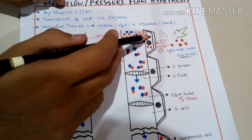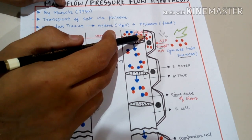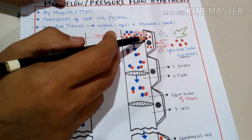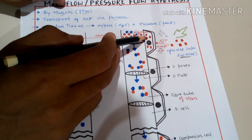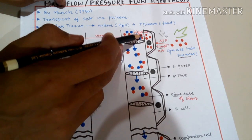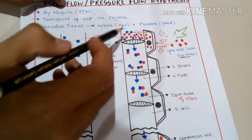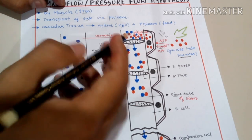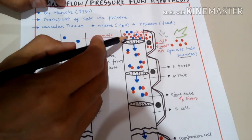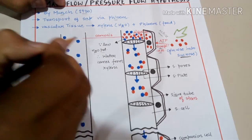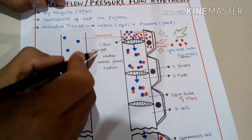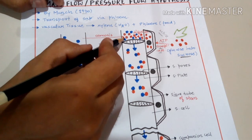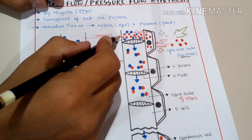Since there are sugar molecules in the companion cell but none in the sieve tube yet, sugar will diffuse from high concentration to low concentration. This is diffusion via a concentration gradient. As a result, sugar molecules enter the sieve tube. This increases the solute concentration, lowers the water potential, and water molecules move from the xylem into the phloem via osmosis.